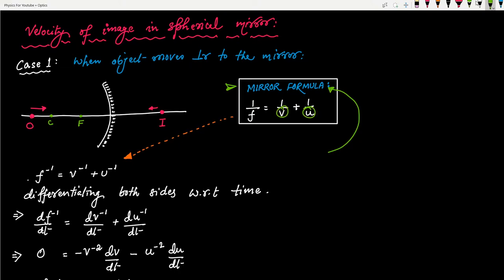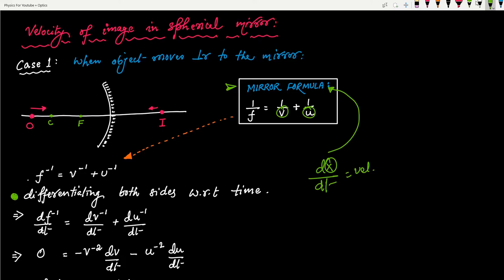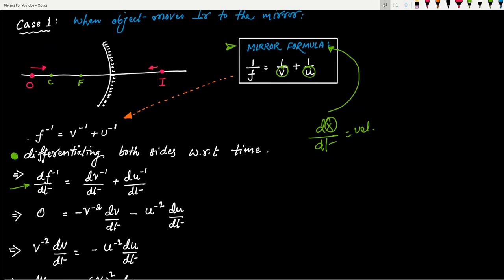The mirror formula gives us the relationship between v and u. Once we establish that, things are quite easy — we just differentiate. We rearrange the formula: 1/f equals 1/v plus 1/u, written as f⁻¹ equals v⁻¹ plus u⁻¹. Then we differentiate both sides with respect to time. We know that differentiating position with respect to time gives us velocity — and here v and u are displacements from the pole, so the concept is similar.